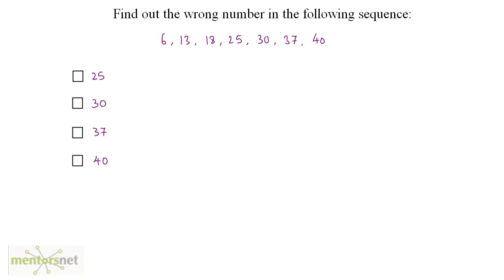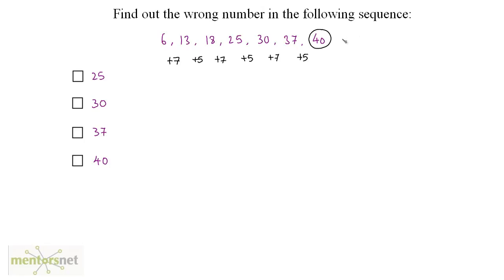For the next sequence, adding 7 to 6 gives 13, then adding 5 gives 18, then +7 gives 25, then +5 gives 30, then +7 gives 37. The pattern alternates +7 and +5, so 37 plus 5 should give 42 — not 43. Hence 43 is the wrong number, and option D is the correct answer.